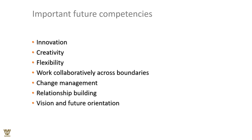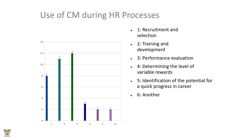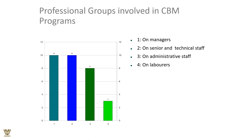The use of competency management during the human resource process covers recruitment and selection, training and development, performance evaluation, determining the level of variable rewards, and identification of potential for quick career progression. This is what competency management demands, and these HR processes have been plotted as the key areas where competency-based management is applied at every level.